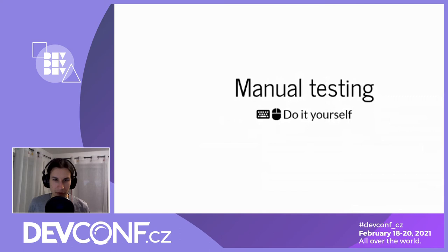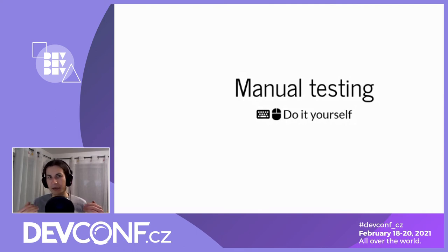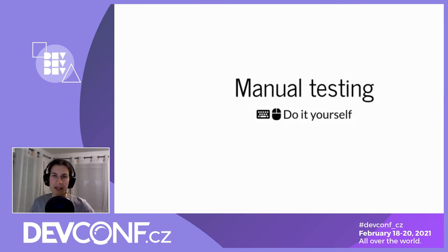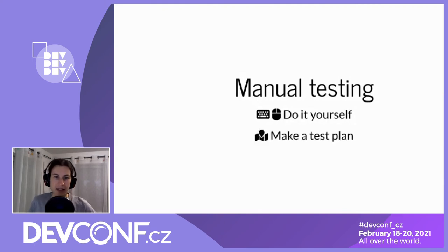That should be it for unit testing. Let's go to manual testing - and you might say, 'manual testing, you mean doing it yourself?' Yes, exactly. That might sound like a weird suggestion in today's world where we try to automate everything. When does this make sense? Manual testing really makes sense if you have a one-shot extension - you've written it once and expect future changes to be very small - or if you have a really complex environment that's essentially impossible to create automatically.